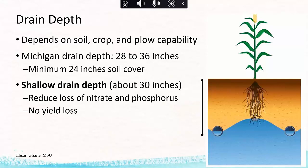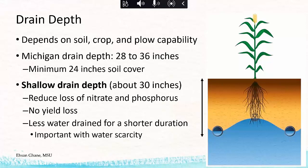Research has also shown that with shallow drains there is no yield loss — if you put your drains shallower, you're not going to lose yield. Additionally, shallow drains result in less total water drained over a shorter period of time, as opposed to more water being drained with deeper drains over a longer period. During a dry growing season like this one, shallow drains can reduce drought risk by leaving more water in the soil profile.